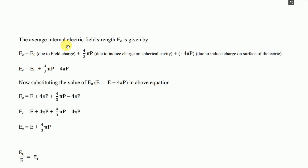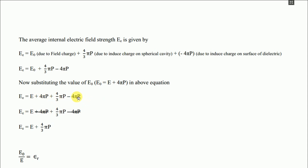In Part 2, we find the average internal electric field strength EE. It is given by E0 (due to the field charge) plus 4/3·πP (due to the induced charge of a spherical cavity) minus 4πP (due to the induced charge on the surface of the dielectric). Summing these: EE = E0 + 4/3·πP − 4πP. We know E0 = E + 4πP, so substituting: EE = E + 4πP + 4/3·πP − 4πP. The +4πP and −4πP cancel, giving EE = E + 4/3·πP.